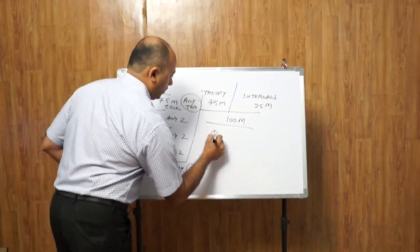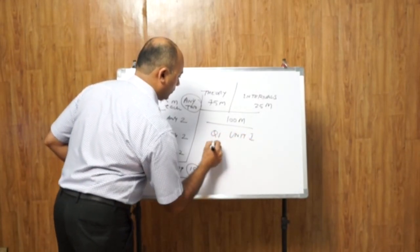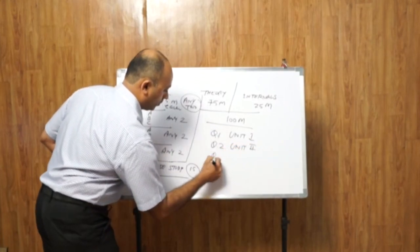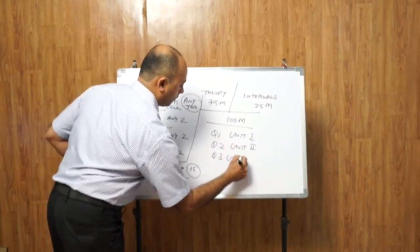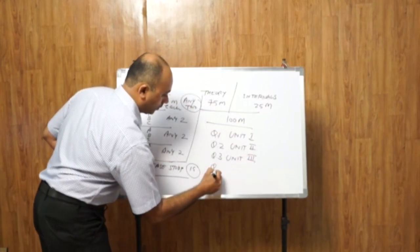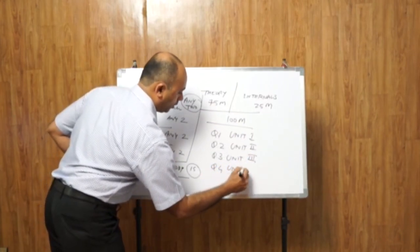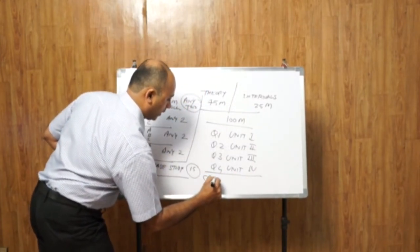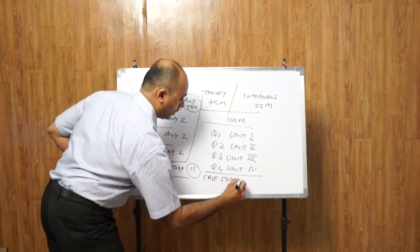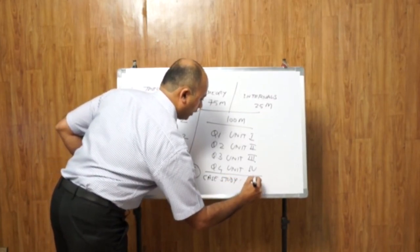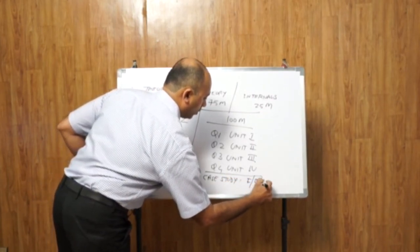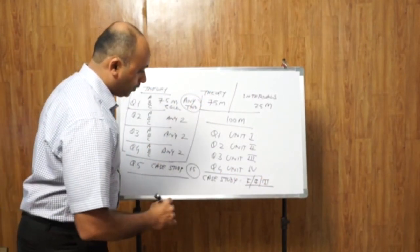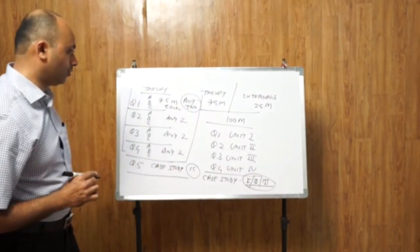Question number 1 is from Unit 1, question number 2 is from Unit 2, question number 3 is from Unit 3, and question number 4 is from Unit 4. The case study, question number 5, can be from Unit 1, Unit 2, or Unit 3 — not from Unit 4.